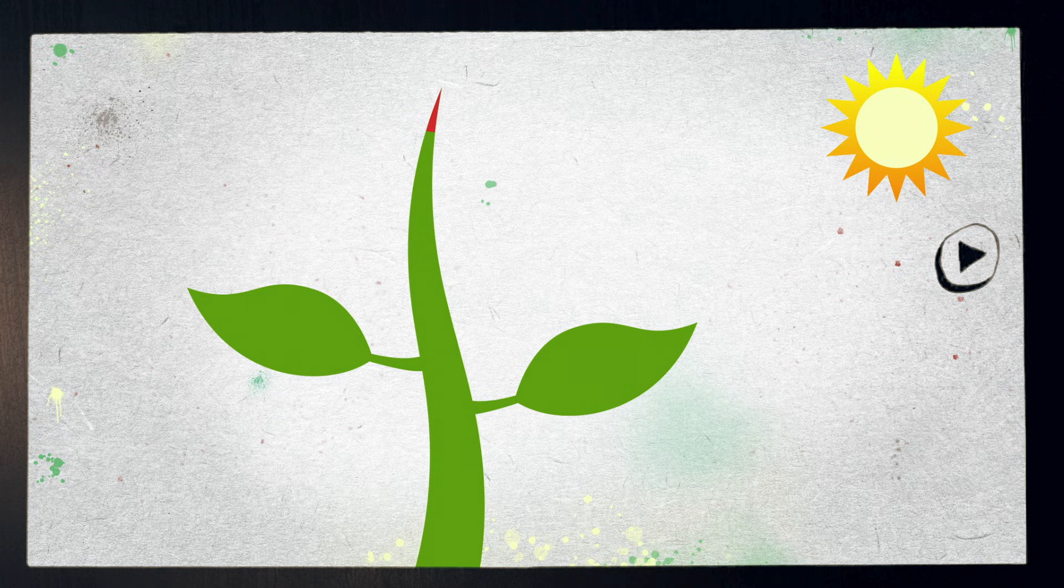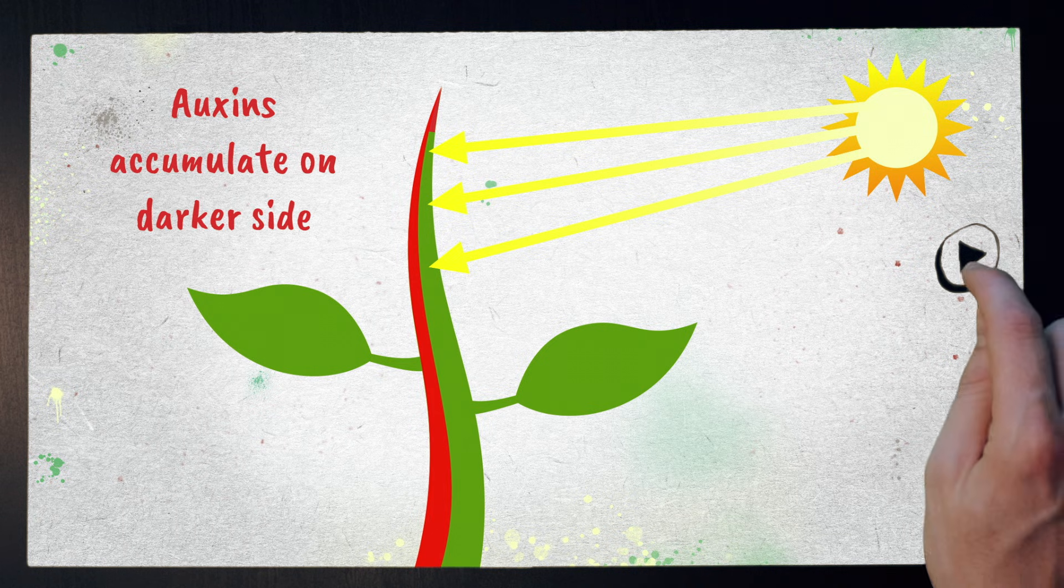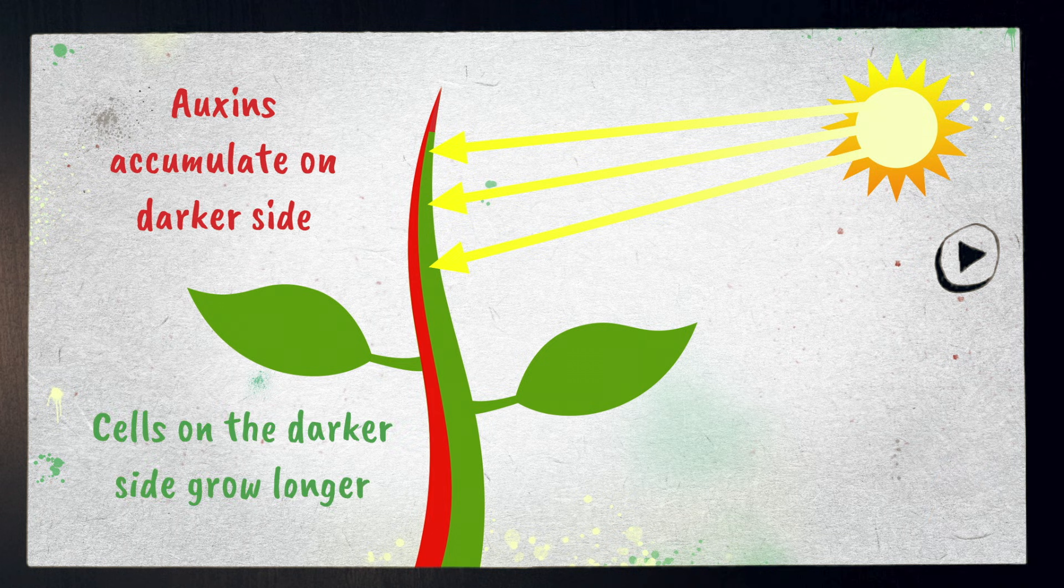But if light reaches a plant from one side, auxins will accumulate on the darker side. This means the cells on the darker side will grow longer than those on the bright side.